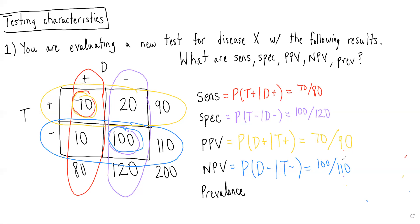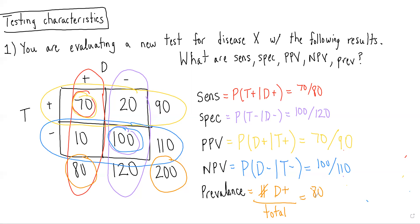And then lastly, prevalence is equal to number with the disease over total. So in this case, it would be number with the disease of 80 over the total of 200, equal to 80 over 200.